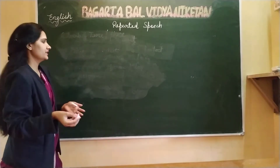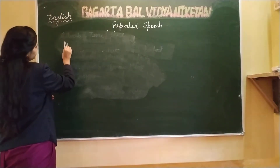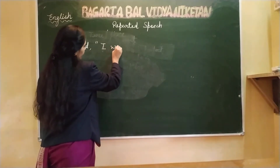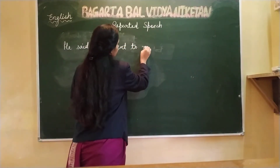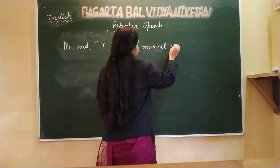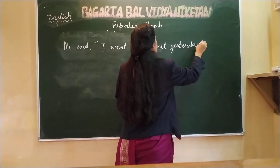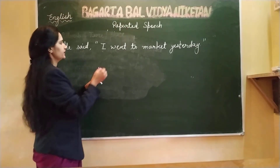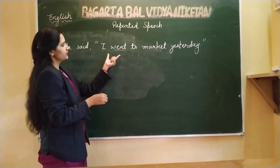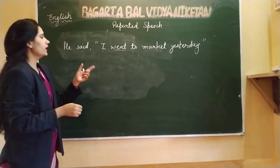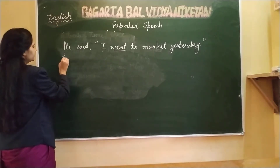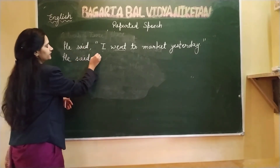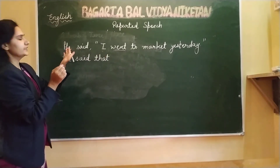Let's apply what we've learned with a past sentence example. The direct sentence is: He said, "I went to market yesterday." When I read this sentence, I see 'went', which means this is a simple past tense. So I need to change it to past perfect. I will write: He said that — and 'I' refers to 'he', so I write 'he'.